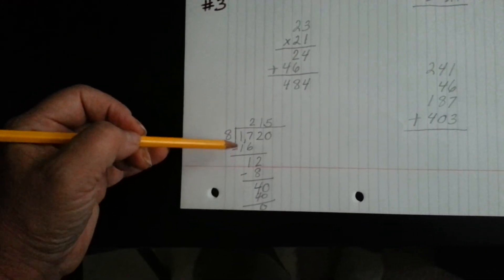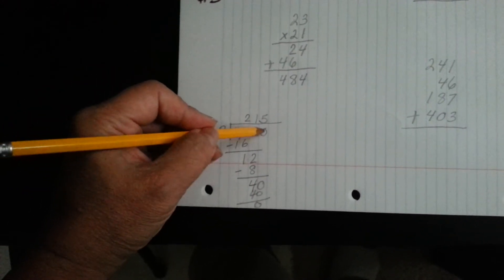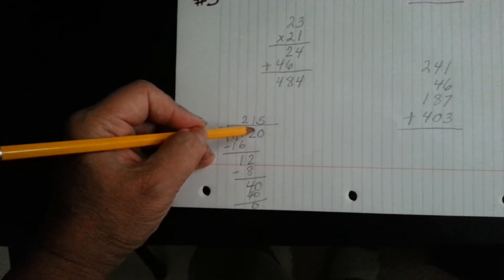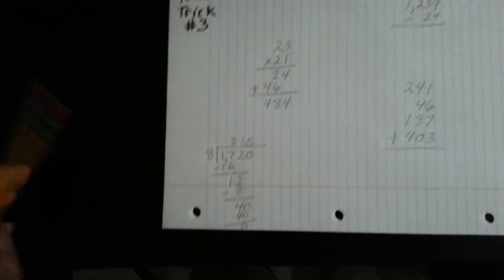Long division ends up becoming easier to see because you see the columns that the numbers come down in. And it keeps everything in order.